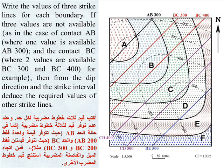Write the values of three strike lines for each boundary. If the three values are not available — as in the case of contact AB where one value is available (AB 300), and contact BC where two values are available (BC 300 and BC 400) — then from the dip direction and the strike interval, deduce the required values of the other strike lines.